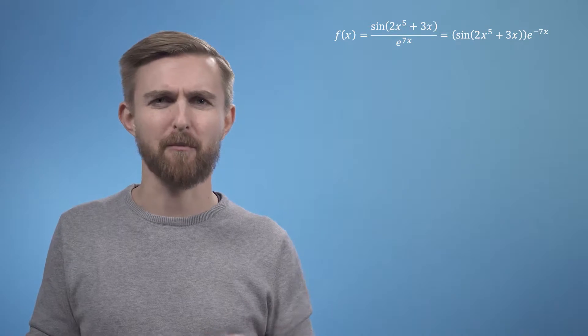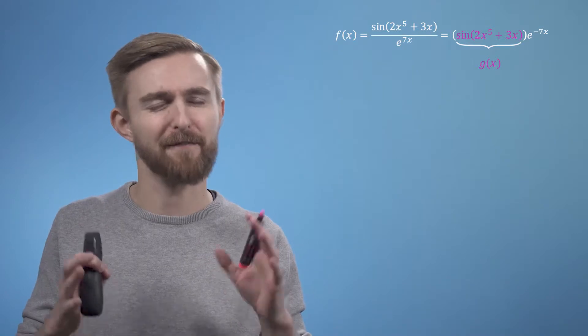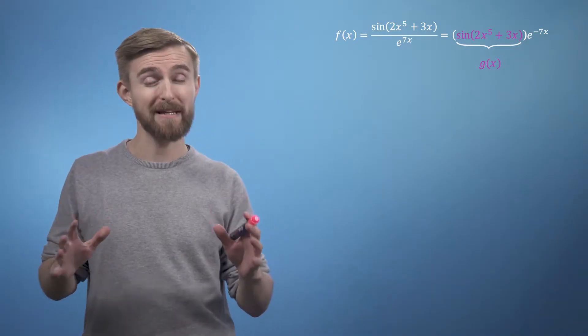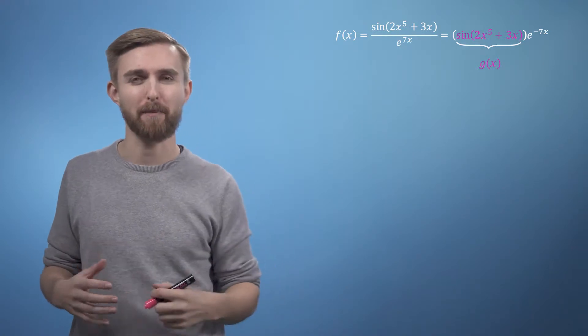Let's start with the first part, which we can call g of x. We've got the trigonometric function sine applied to a polynomial 2x to the 5 plus 3x. This is a classic target for the chain rule. So all we need to do is take our function and split it up into the two parts in order to apply the chain rule.